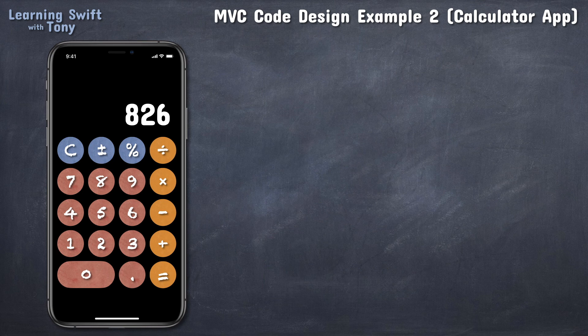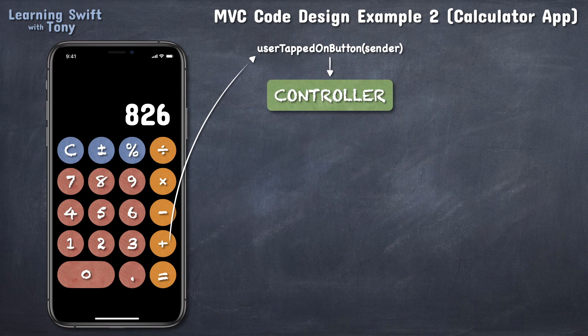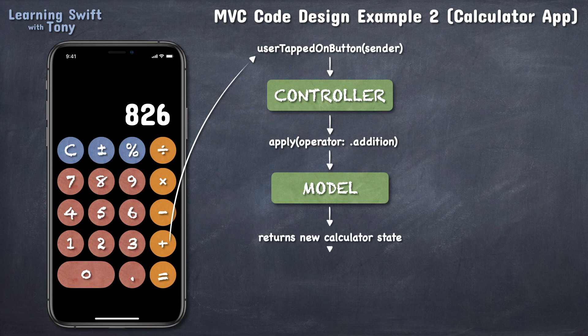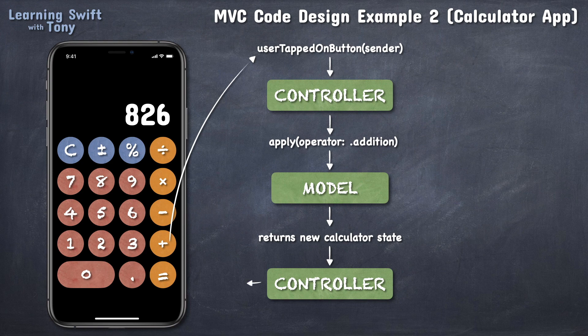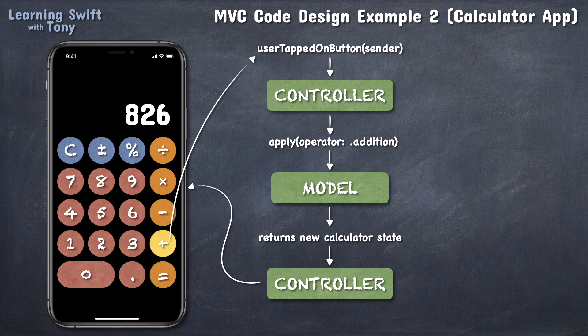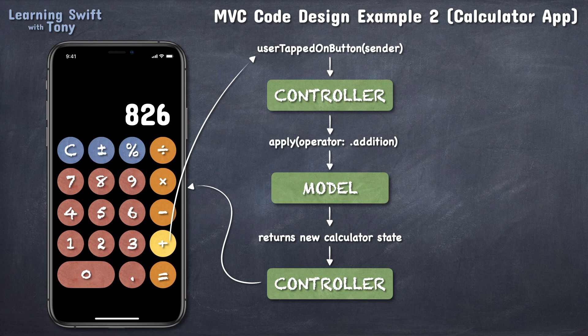If the user now taps on the plus button, the view will inform the controller about this tap gesture first. The controller will look at the button that was tapped and as a result will send an apply operator addition message to the model. The model, in turn, will generate a new calculator state and will return that state back to the controller, which in turn will direct the view to reflect the new state on the screen. As a result, the display label will remain 826, but the plus button will change its background color to indicate the calculator is now in a binary operation mode, waiting for a second operand.